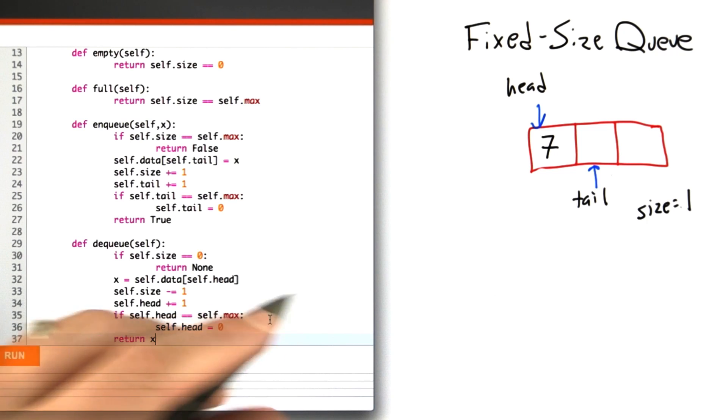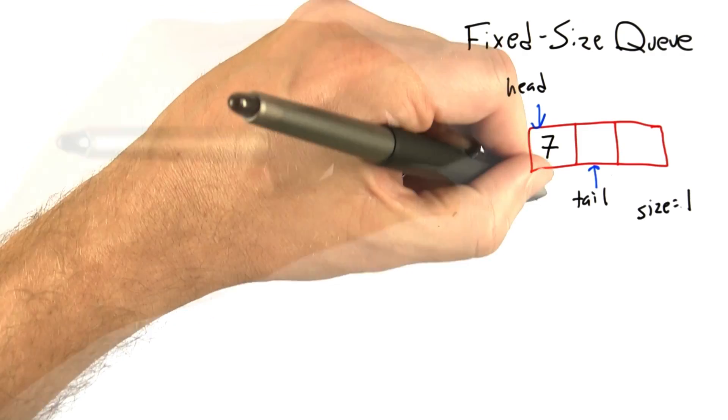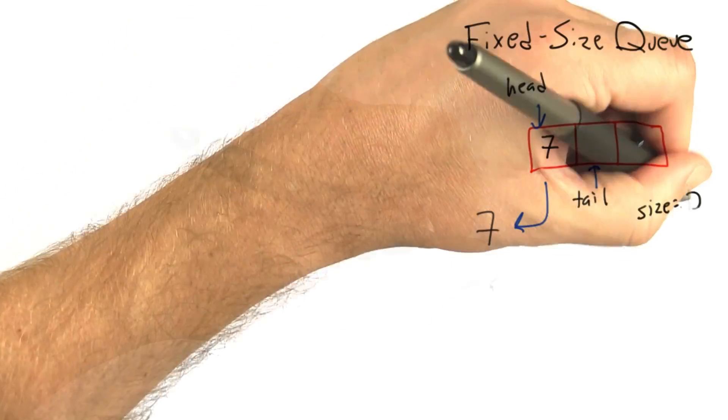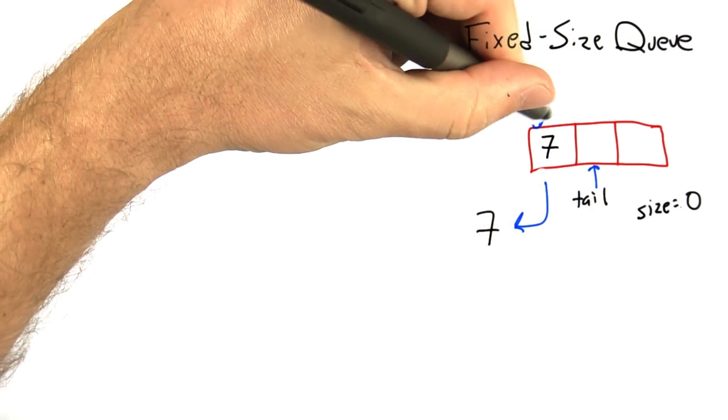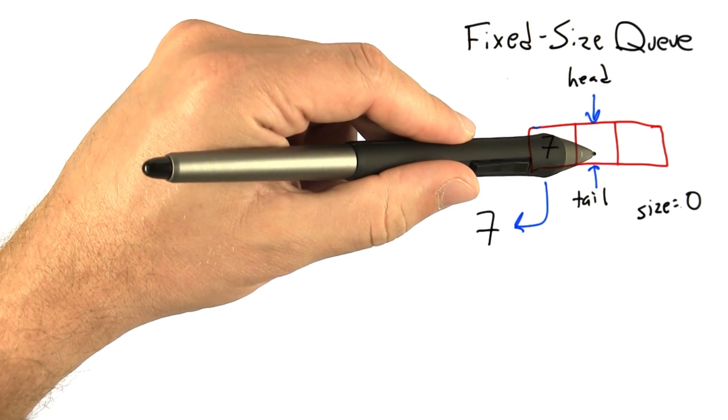Let's go back to the drawing and see how this plays out. We're going to return 7, decrement the size, and make the head element point to the next element of the list.